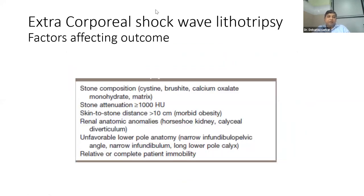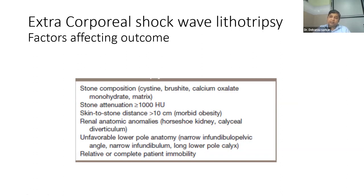Factors affecting ESWL outcomes include stone composition — stone attenuation more than 1000 HU is a contraindication. If you know the patient has cystine, brushite, calcium oxalate monohydrate, or matrix stone, do not give ESWL. For recurrent stone formers with previous stone analysis, we know the composition and can anticipate. If stone attenuation is more than 1000 HU or the composition is unfavorable, avoid ESWL.